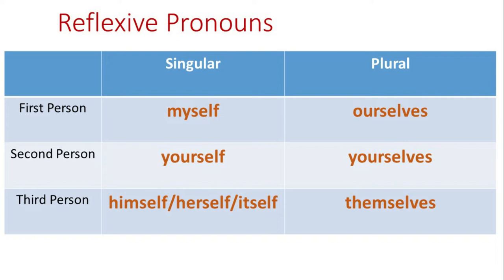Myself and ourselves refer to the speaker, that is the first person. Yourself and yourselves refer to the listener, that is the second person. Himself, herself, itself, or themselves in plural refer to the third person, that is the object or the person who is being spoken about. These words are called reflexive pronouns.